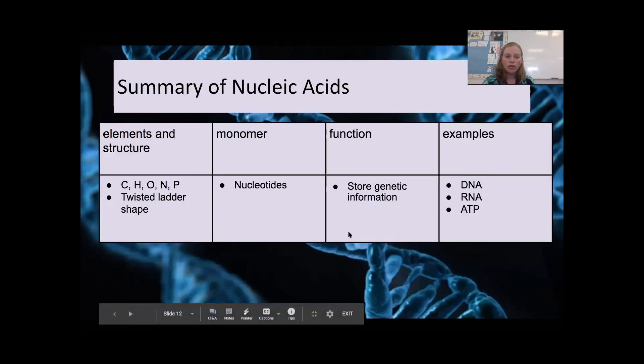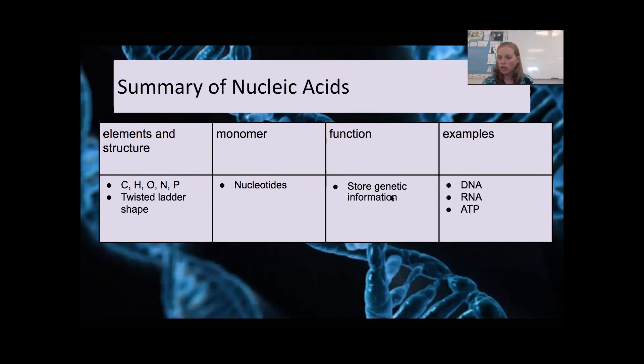Quick little summary of nucleic acids. We have our elements, everything but sulfur, so CHONP, C-H-O-N-P. We also have the twisted ladder shape in DNA, and we just have a single helix in RNA. The monomer for both is going to be a nucleotide with your phosphate, sugar, and nitrogenous base as the three parts. The function, and there's only one, to store genetic information. Those nitrogenous bases are going to be in a certain order, and that's going to code for the order of the amino acids in the protein.